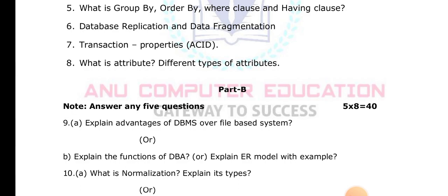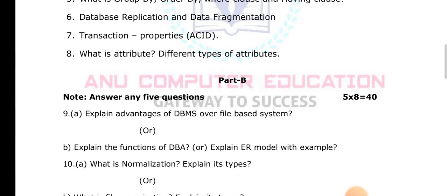What is BCNF (Boyce-Codd Normal Form)? BCNF is an advanced version of 3NF, also called 3.5 Normal Form. For a table to be in BCNF, it must satisfy 3NF and all left-hand sides (LHS) of functional dependencies must be a candidate key.